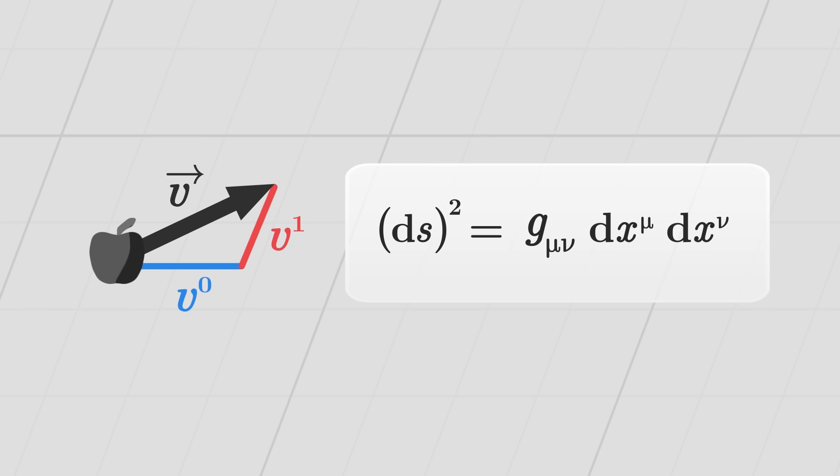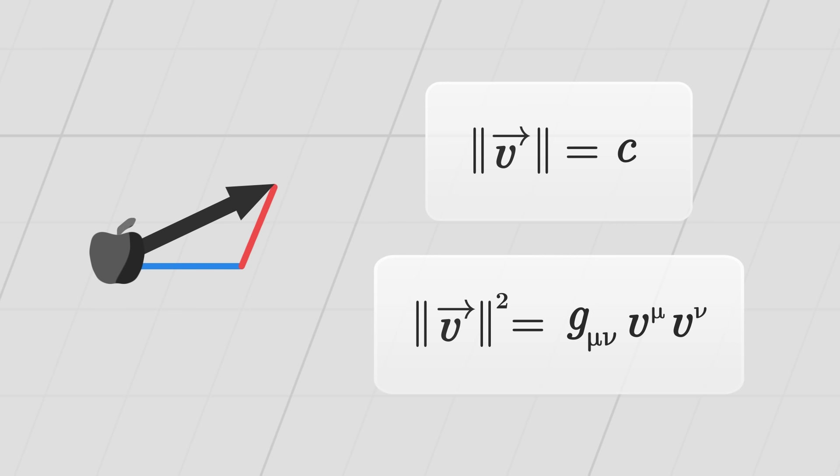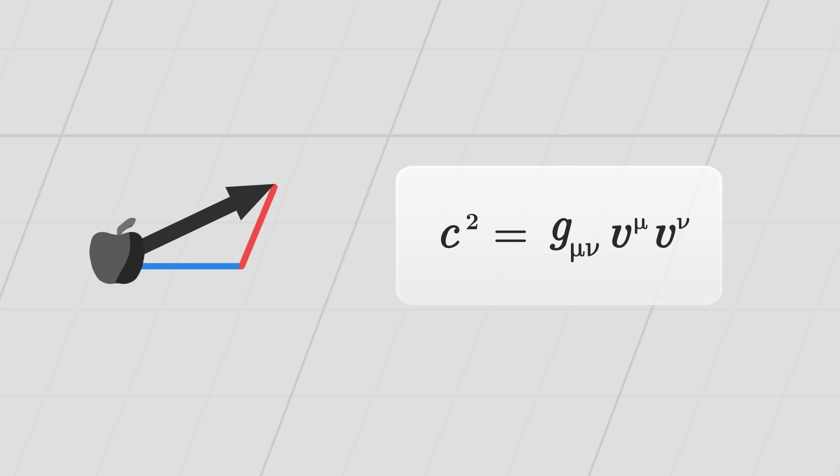This formula in particular allows us to express the norm of the velocity vector. To do this, we replace the coordinate differences by the components of the vector. Bearing in mind that the norm of the velocity is always the speed of light, we can write a more precise version of this equation.